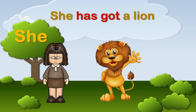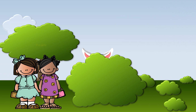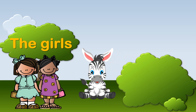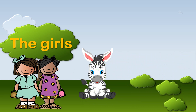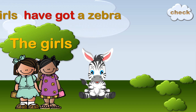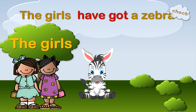What about this one? The girls. What's behind the cloud? Yes, a zebra. So the girls have got a zebra.